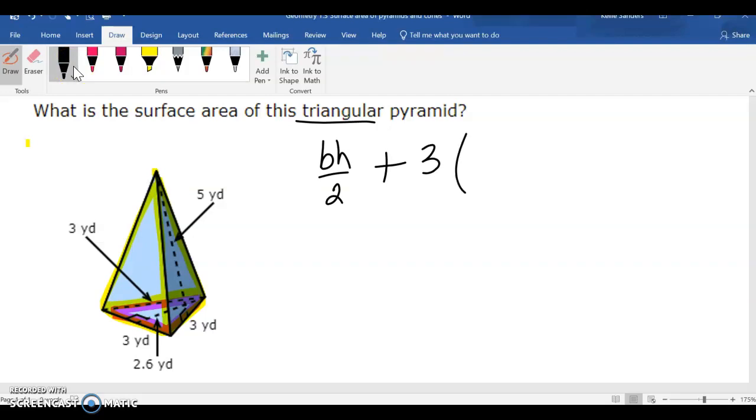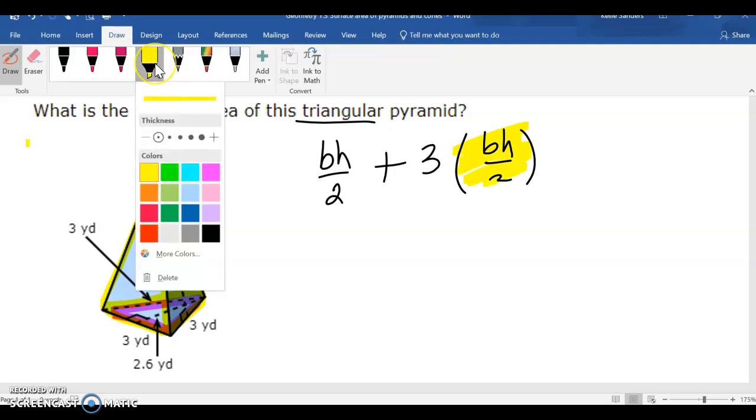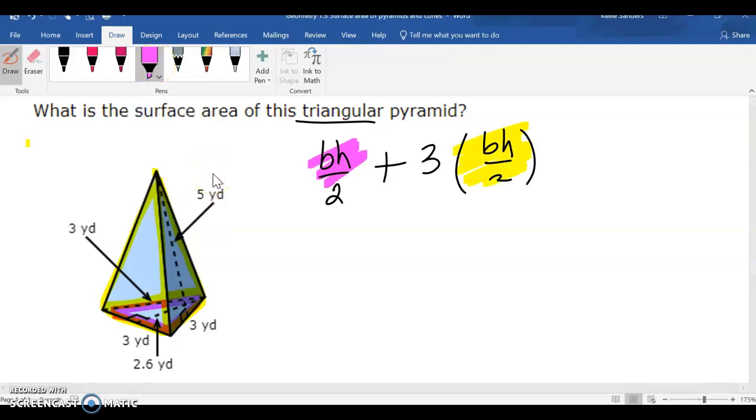So, we're going to do 3 base times height divided by 2 of the yellow. And this is of the purple. You kind of have to make sure that you read the numbers right. The purple base's base is 3, and the height of that purple is 2.6, and we're going to divide by 2 because it's in the shape of a triangle.